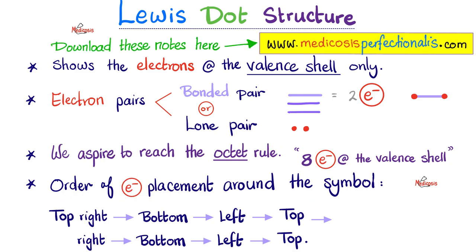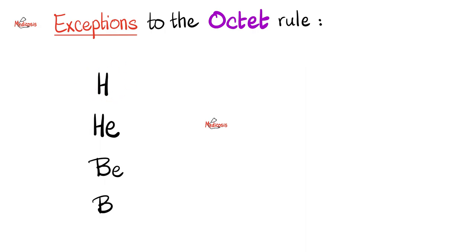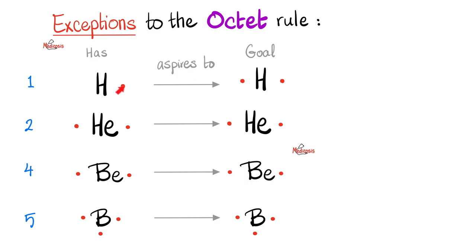How should I place electrons around the symbol? Start top right, then bottom, then left, then top, then continue pairing right, bottom, left, top — that's how you achieve the octet rule. Some teachers prefer this order; others don't care. Exceptions to the octet rule: hydrogen, helium, beryllium, and boron. Hydrogen has one electron and aspires to have two — a duplet, not an octet. Helium also has two valence electrons and is happy — duplet. Beryllium is also a duplet. Boron is happy with just three.